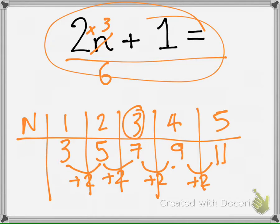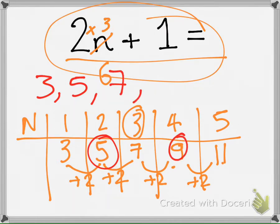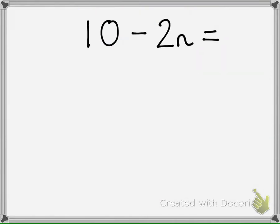And I'm just going to write this in a color so you can see clearly. So the first term in the sequence will be 3. Then it will be 5. Then it will be 7. Then it will be 9. Then it will be 11.